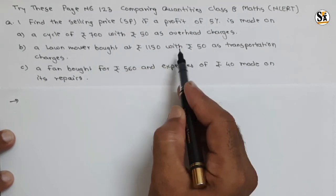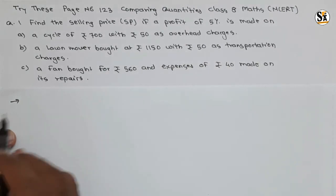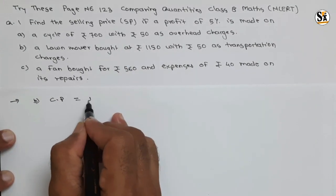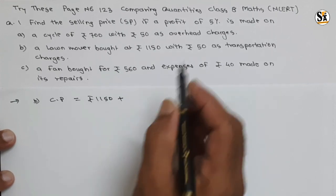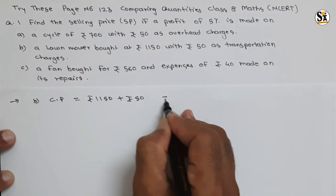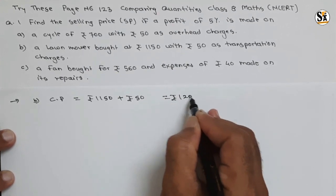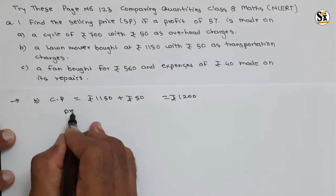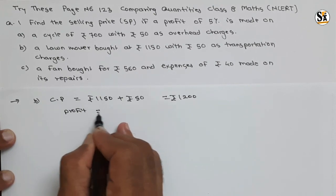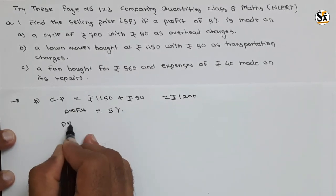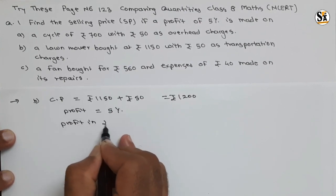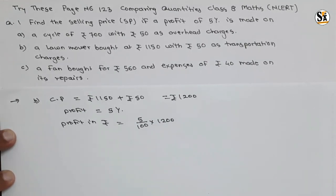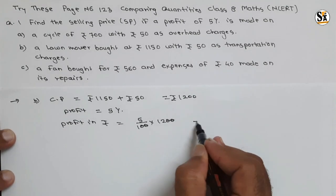Now Part B: a lawnmower bought at rupees 1150 with rupees 50 as transportation charges. So the cost price for Part B will be rupees 1150 plus rupees 50, giving a total cost price of rupees 1200. With a profit of 5 percent, profit in rupees will be 5 divided by 100 into 1200, which equals rupees 60.